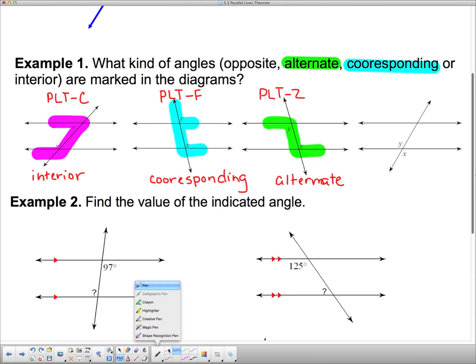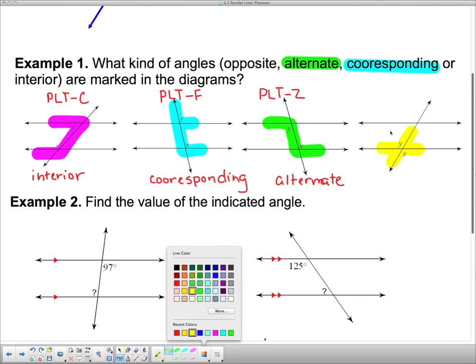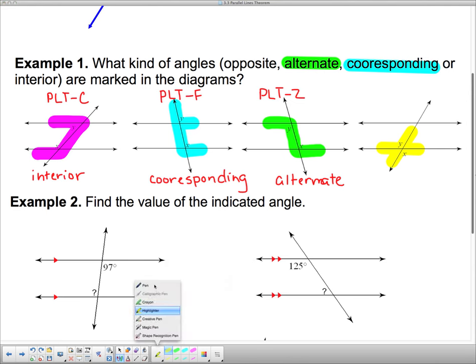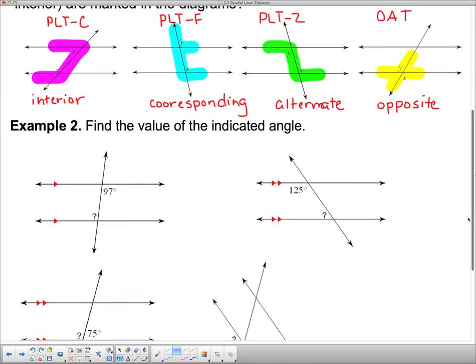And lastly if we take a look at that one, this definitely makes a big X. Those are opposite angles. So these are opposite angles. They're not actually part of the parallel lines theorem, so don't call them PLT X. You could call it an X pattern if you want and I know what you're talking about, but I'd rather you called it the opposite angle theorem or OAT.